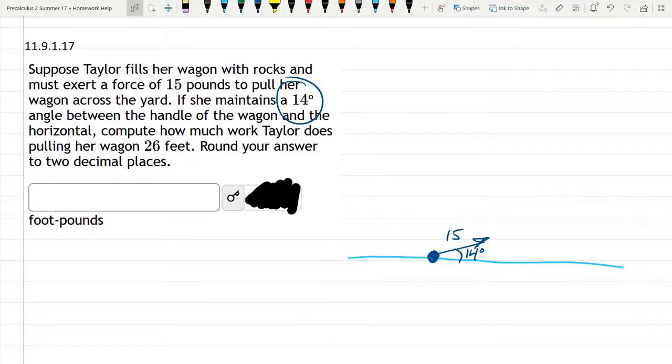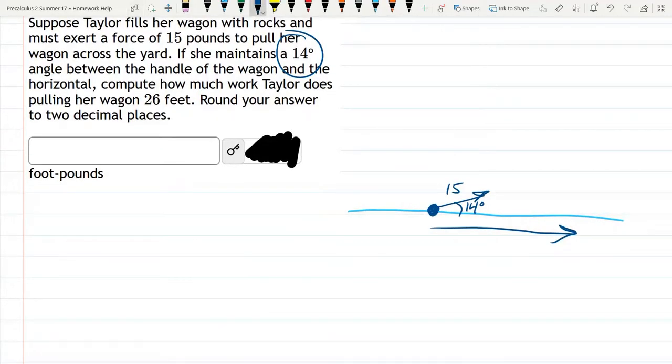Okay, this wagon is going to move to the right, and that's the displacement, and the work is the force dot product with the displacement. The displacement is very easy to compute. It's going 26 feet to the right, so that's why it's a positive 26 for the x-coordinate, and it's not going up or down, so it's 0 for the y-coordinate. That describes this arrow here going to the right.